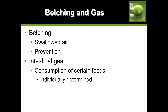Belching comes from swallowed air. Prevention: eat with your mouth closed, eat slowly, and avoid carbonated drinks. Intestinal gas can be caused by certain foods such as beans. To reduce intestinal gas from beans: soak them overnight, throw out that water, rinse them, and cook them in fresh water. This usually takes care of intestinal gas, and it is individually determined.